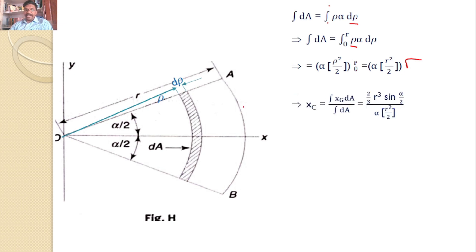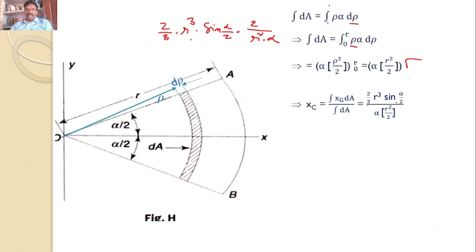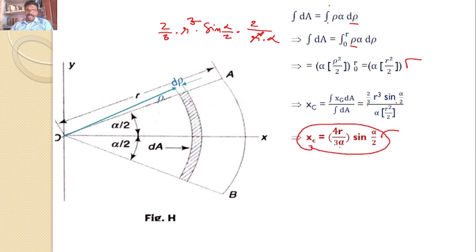The x-coordinate of the centroid x_c equals ∫x_g dA divided by ∫dA — that is (2/3)·r³·sin(α/2) divided by (α·r²/2). Simplifying, we get x_c = 4r/(3α) · sin(α/2). This is the answer for the x-coordinate of the centroid of the area OAB.